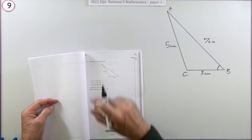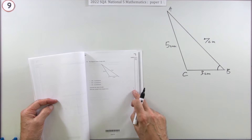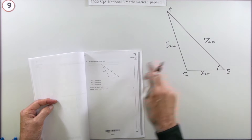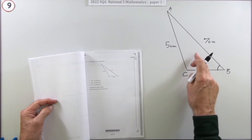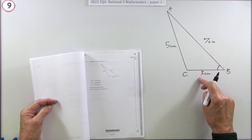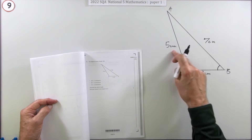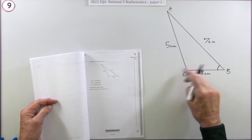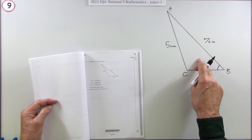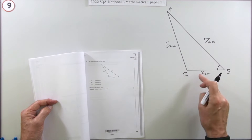Number nine from the 2022 National 5 Paper 1 — a little two-mark question. As soon as you see that diagram, you've got a scalene triangle: a triangle that's got nothing going for it — all the sides are different and there's no right angles. So that's where you would use either the sine rule or the cosine rule.